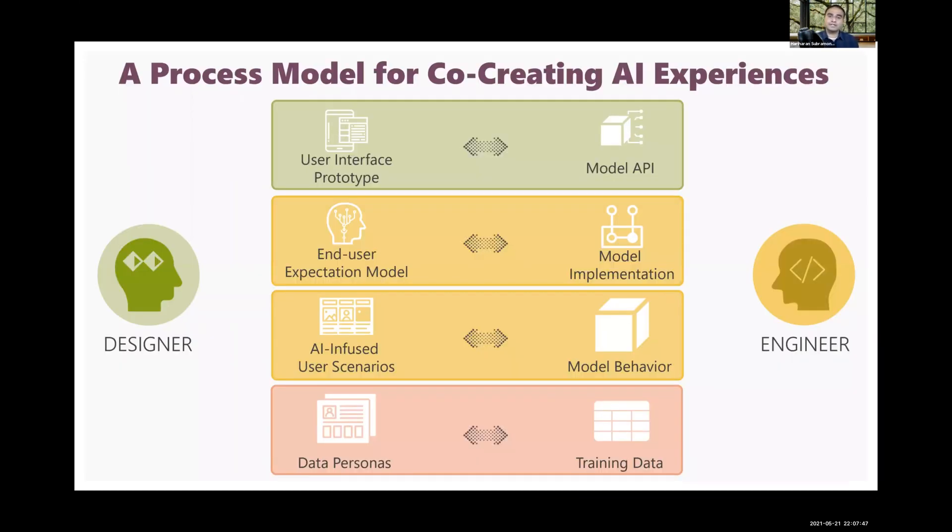Based on these findings, we propose an initial process model for the collaborative design of AI experiences. As opposed to a UX-first or AI-first approach, in our model, the AI and UI components are designed in parallel, a key insight from our study. This is indicated by the bidirectional arrows in the model. Such a model distributes agency between designers and engineers. By using personas, scenarios, walkthroughs, and interface prototypes, designers can participate in designing AI specifications without detailed engineering knowledge.